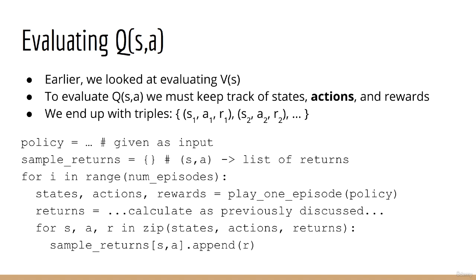Note that earlier, when we discussed the evaluation problem, we discussed how to find V of S. But now we have to find Q of S A. In order to find Q of S A, where we evaluate our policy, we need to keep track of not only the states and rewards, but also the actions. So we're going to record triples of states, actions and rewards. So S1 A1 R1, S2 A2 R2, and so on. Here's what the pseudocode for the evaluation step would look like.